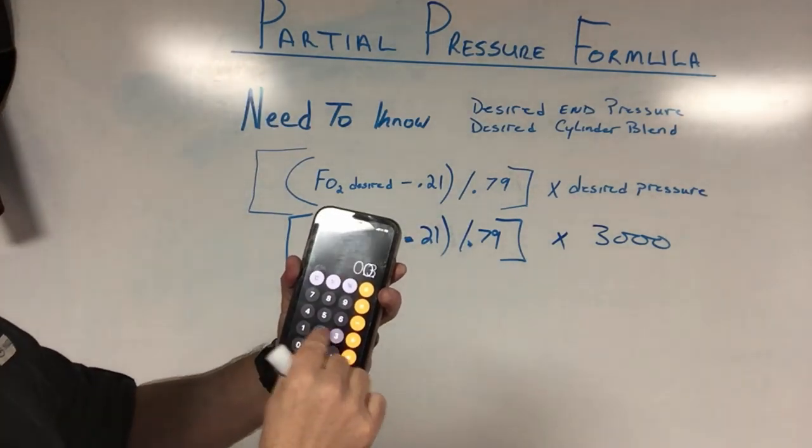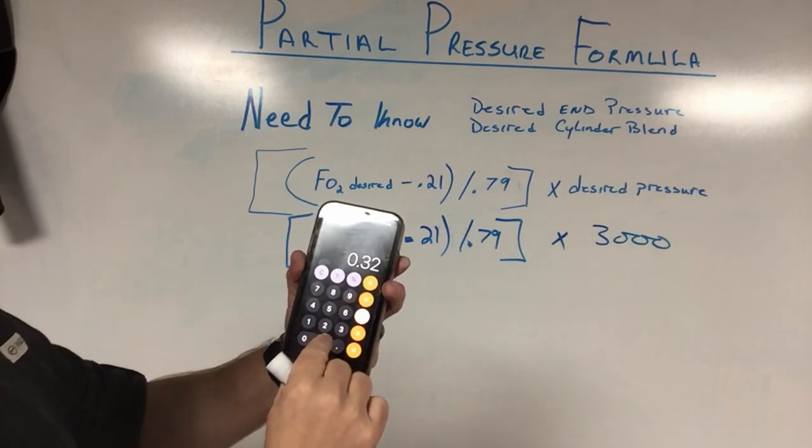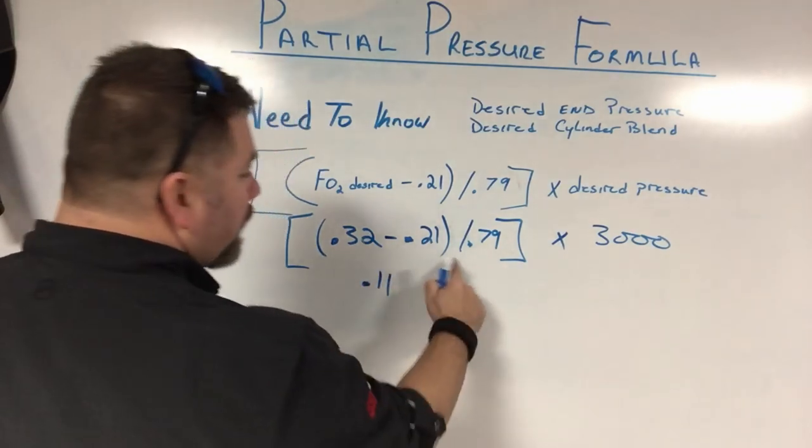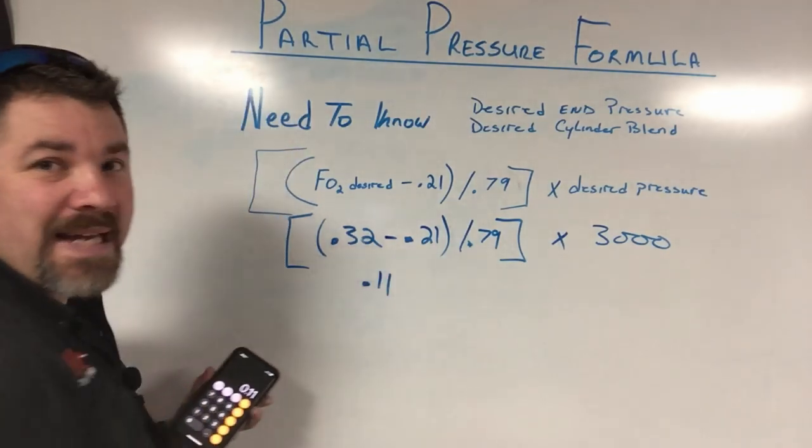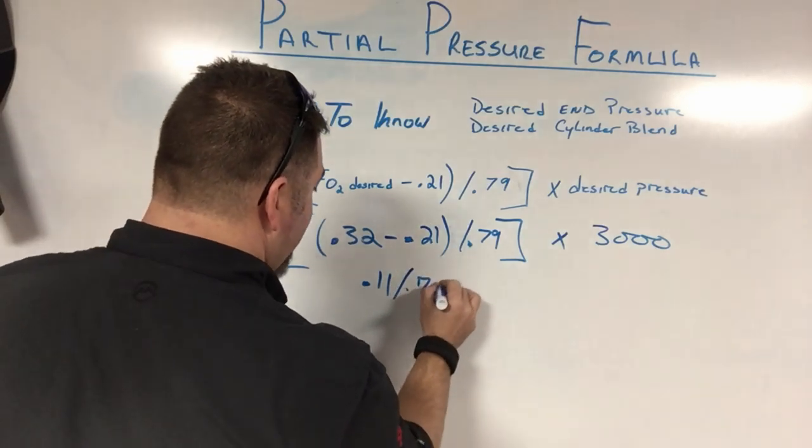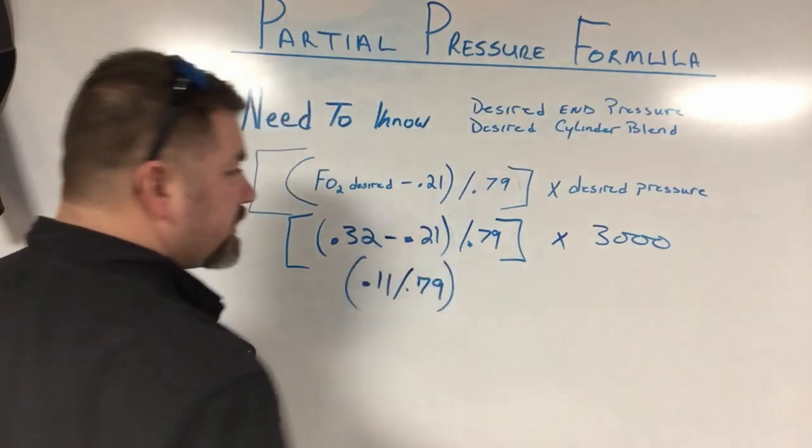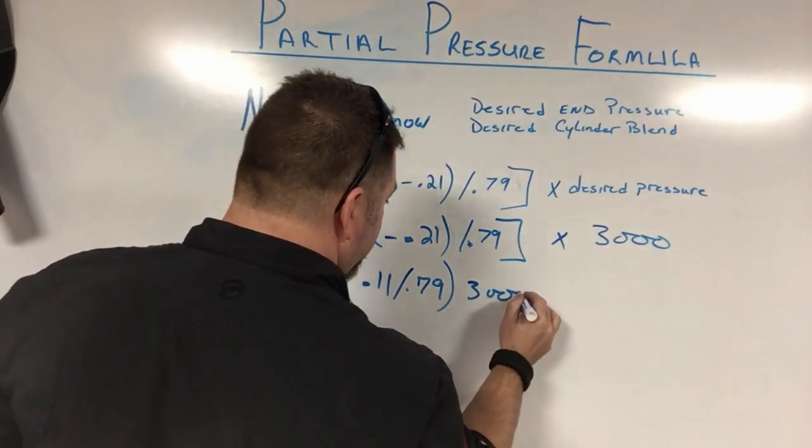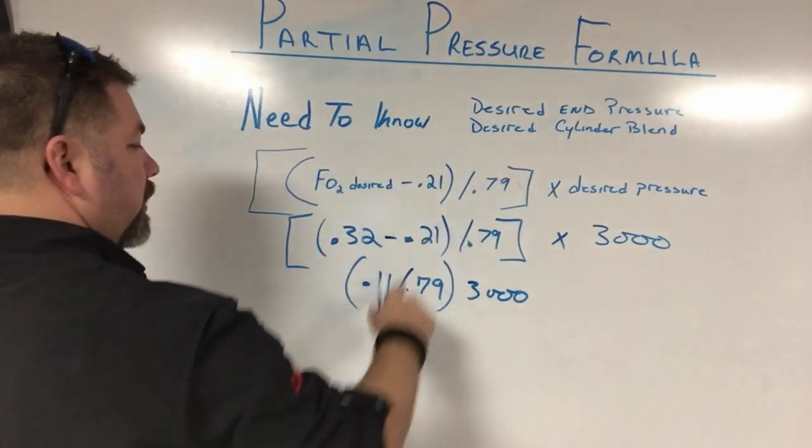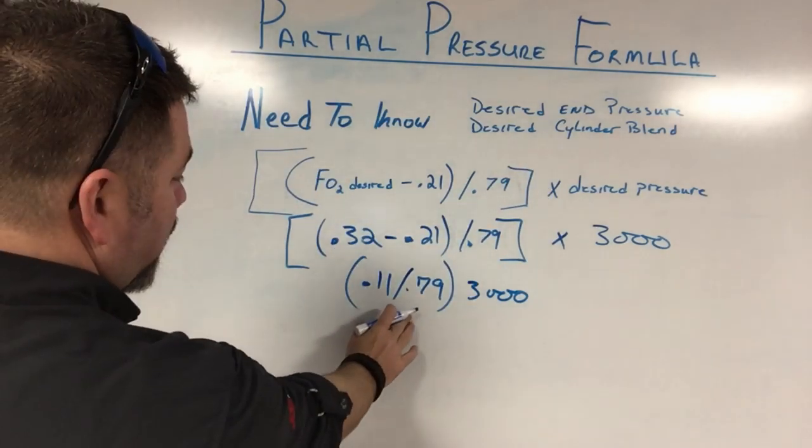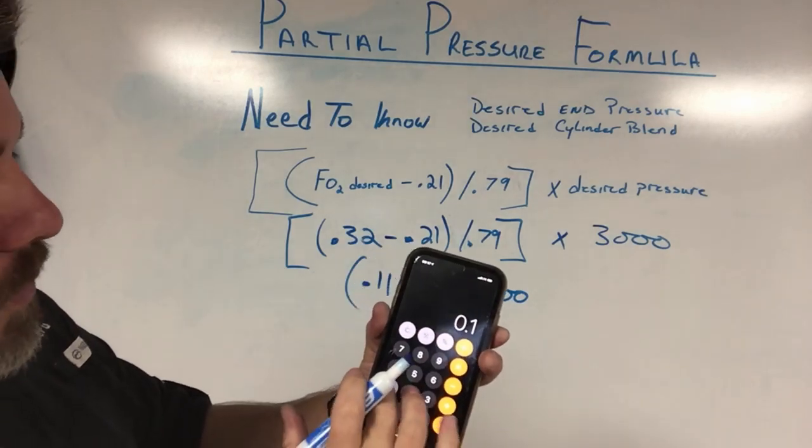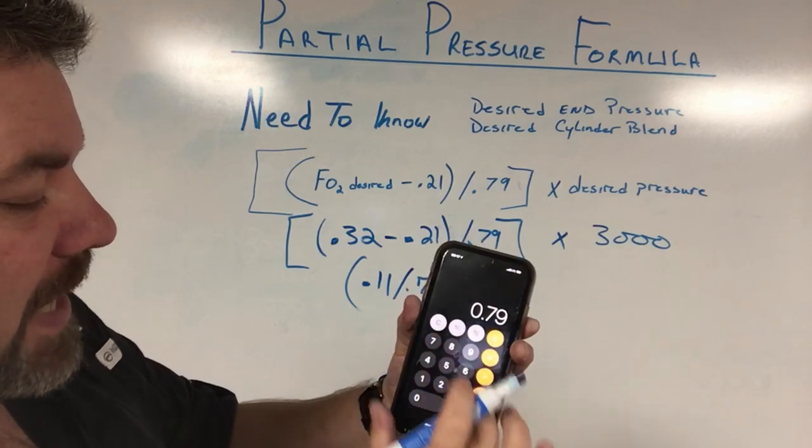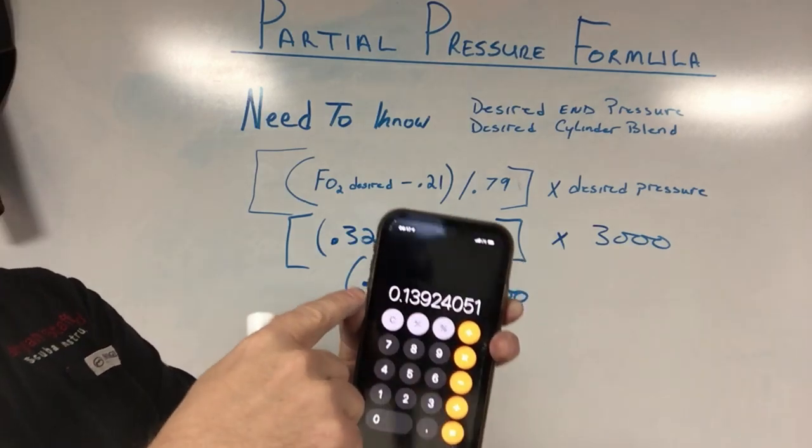Basically, all I'm going to do is take 0.32, I'm going to minus 0.21 from it. It's going to come up to 0.11. So 0.11. But I've got to finish this series out right here. So I'm going to divide that by 0.79 and put that in parentheses here. And then just to make the math easier for me, I like to carry down the equation as well. So I've went from this formula down to this smaller formula. So now I'm going to continue what's in the parentheses as well. I'm going to take 0.11, and then I'm going to simply divide that out by 0.79. That's going to come up to 0.139.